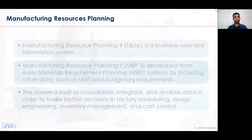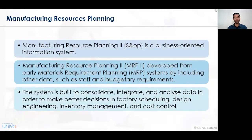Manufacturing resource planning, also called MRP2, is a business-oriented information system in which business planning activities are undertaken with respect to the overall manufacturing process implemented in the organization. Material requirement planning is divided into two categories: MRP1 and MRP2. MRP2 represents the orientation of manufacturing resource planning.